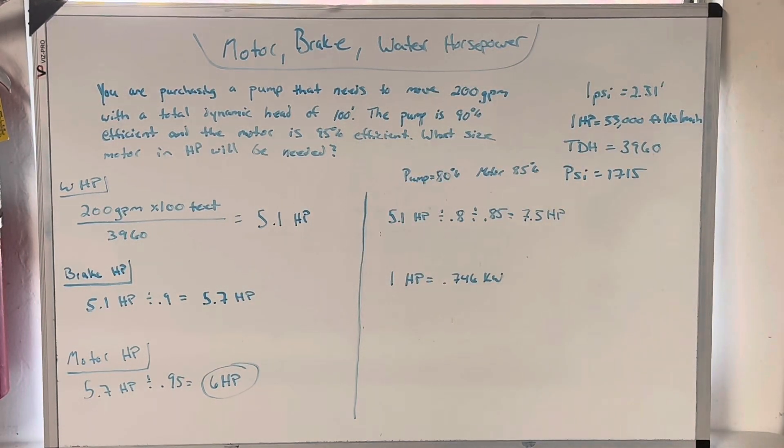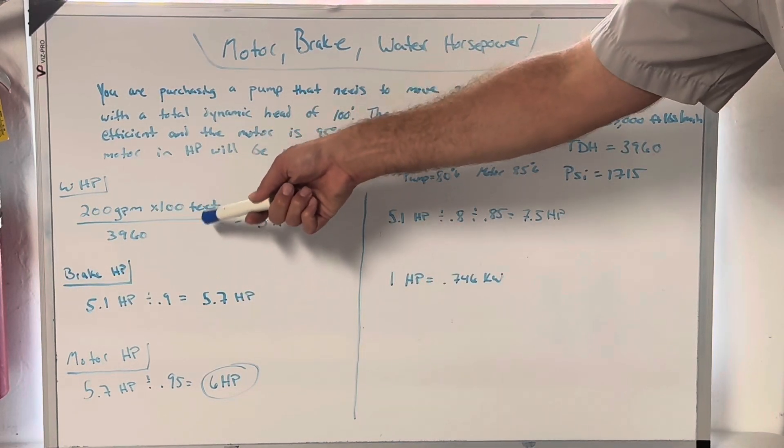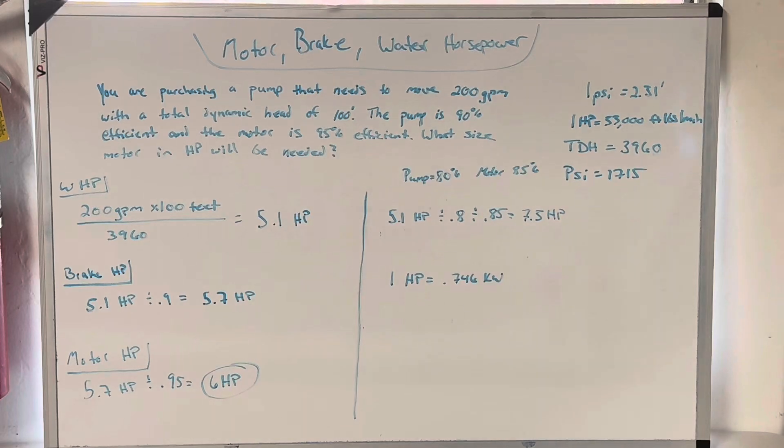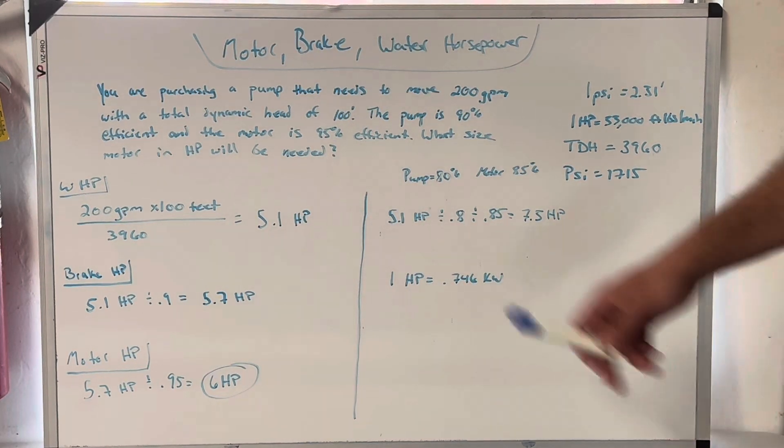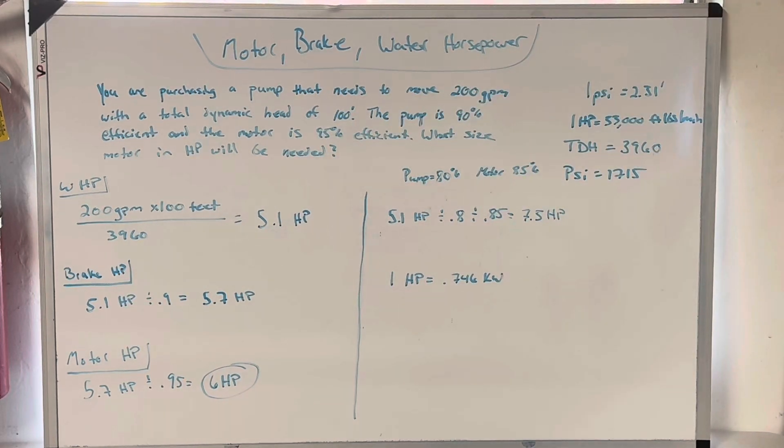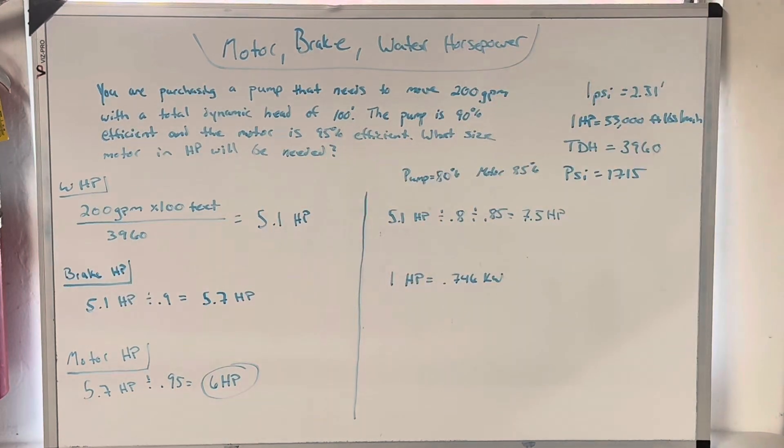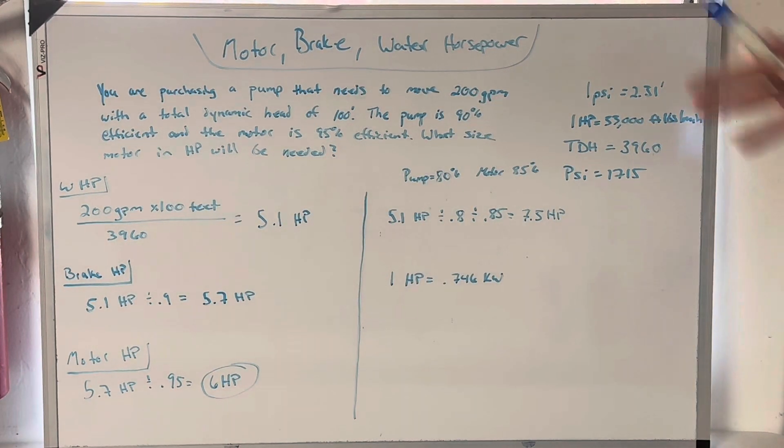So our water horsepower in this case is I've got 200 gallons per minute and a hundred foot of total dynamic head divided by 3960. If you just plug that in your calculator, it's 5.1 horsepower. Boom. We just did water horsepower. Very simple math equation, not hard at all.